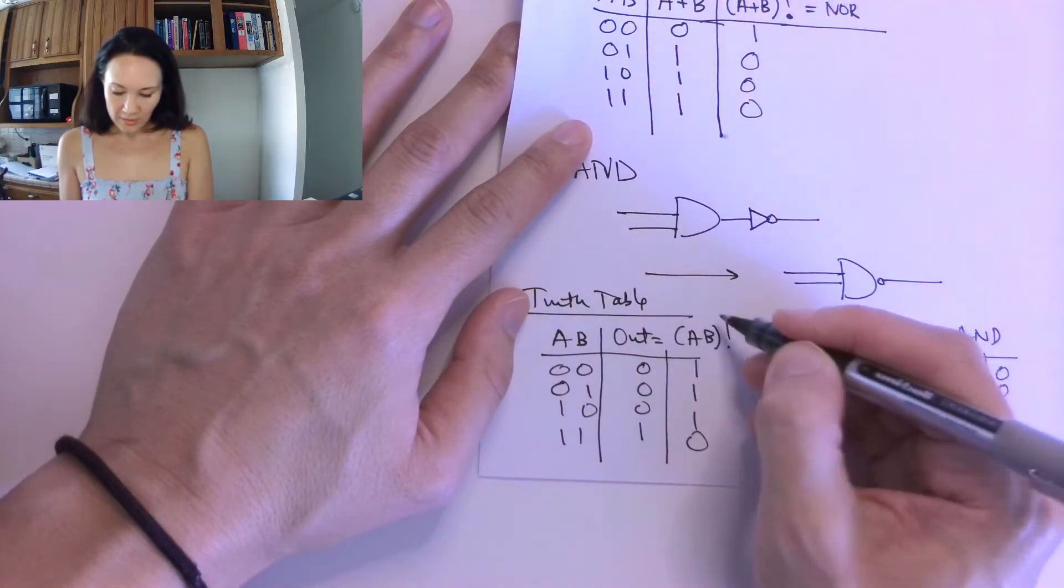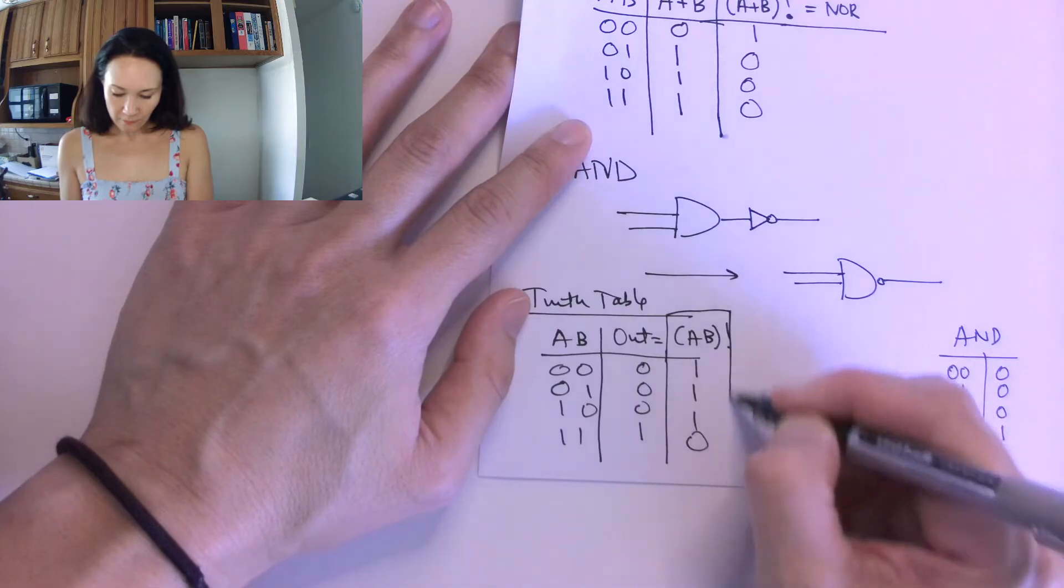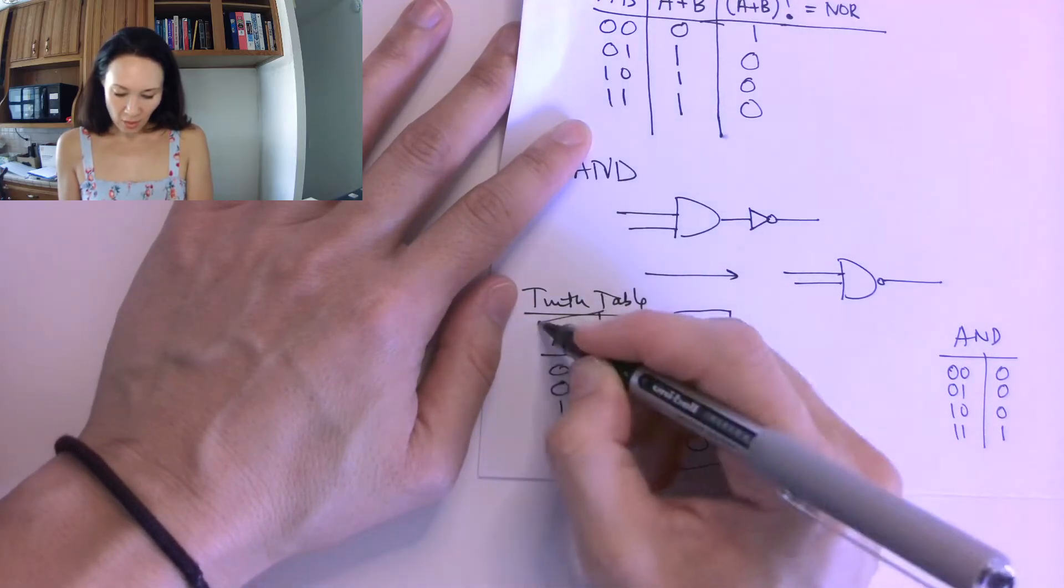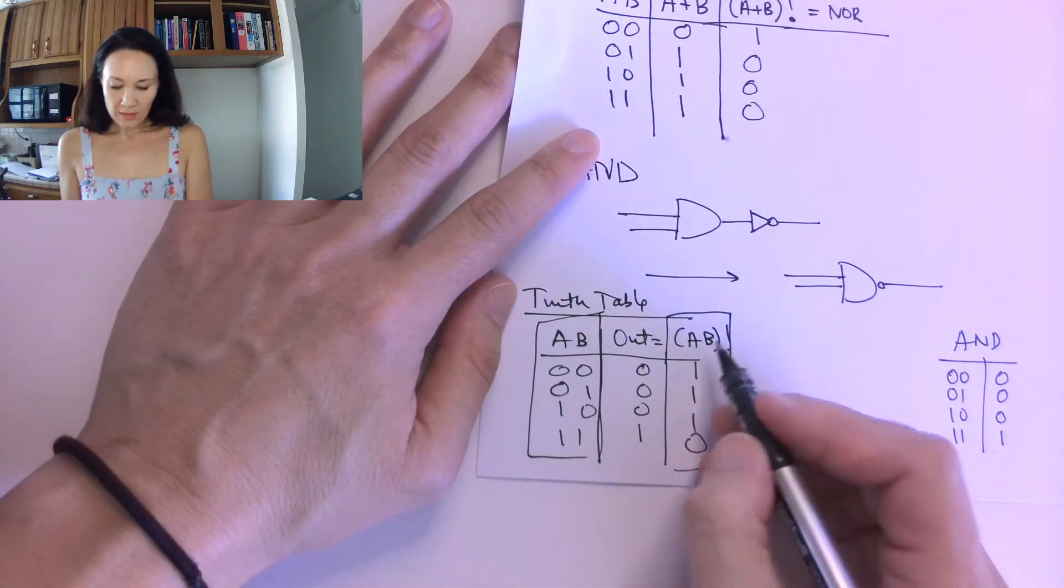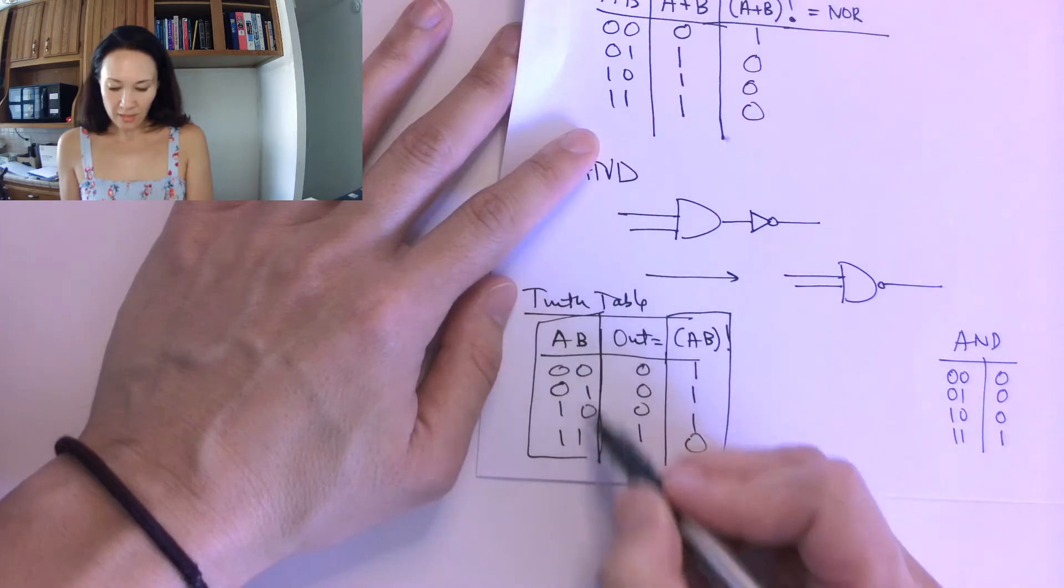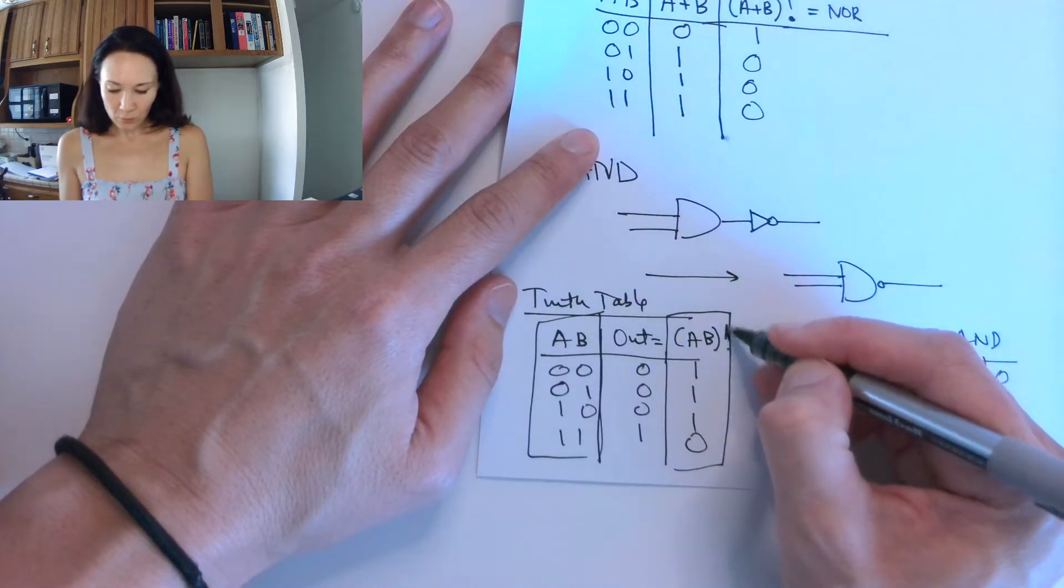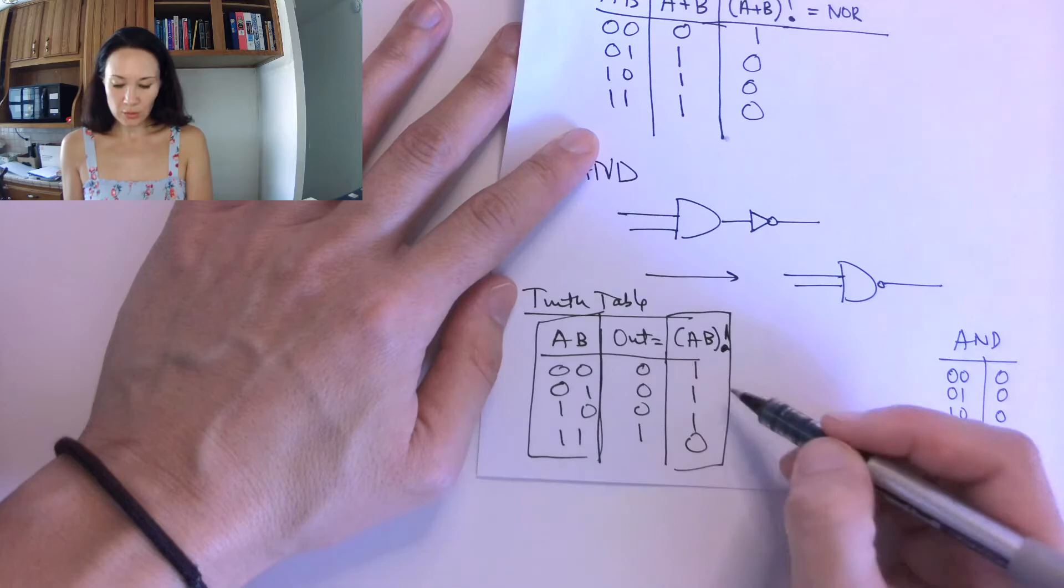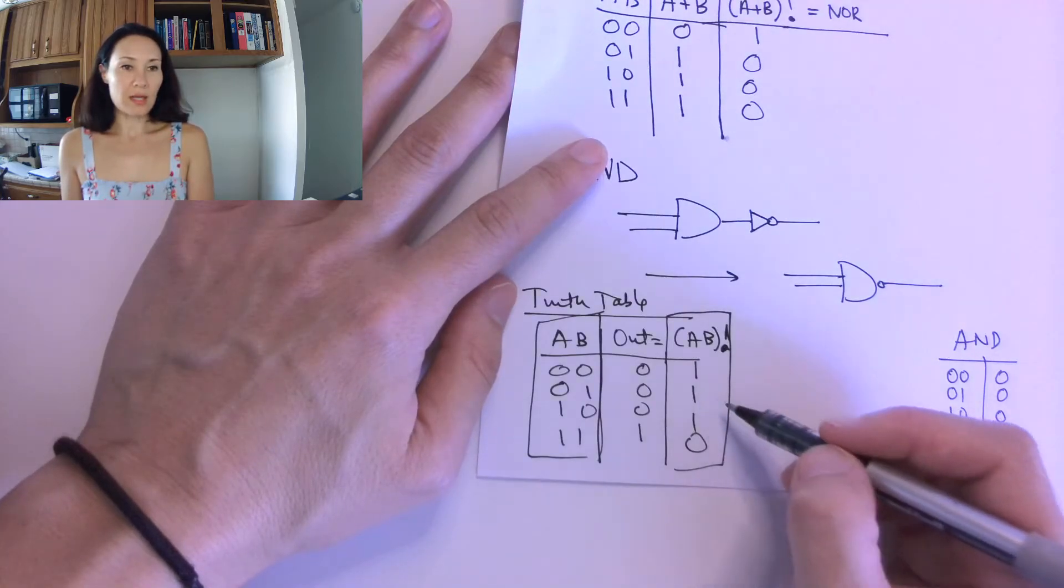This is the truth table for a NAND. This is our inputs and this is our output with the naught on the out here.